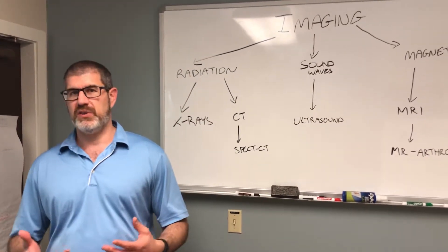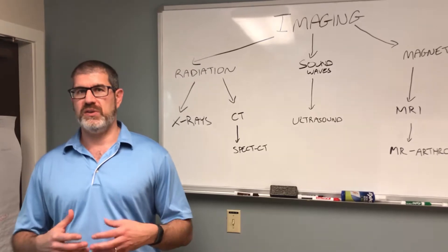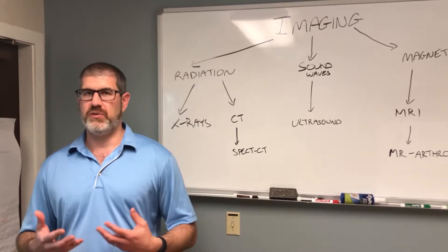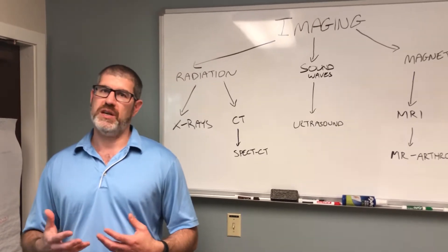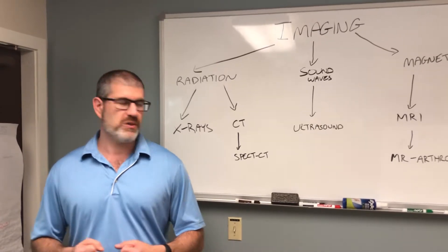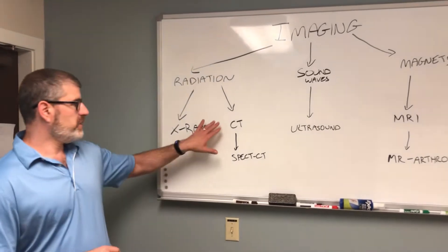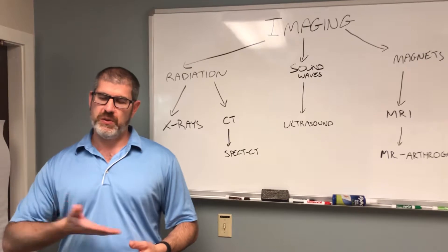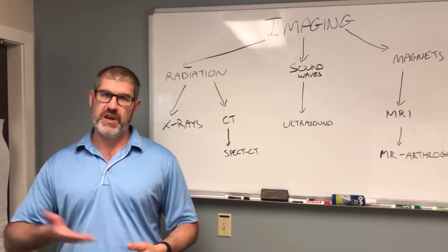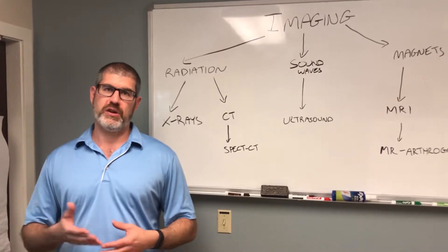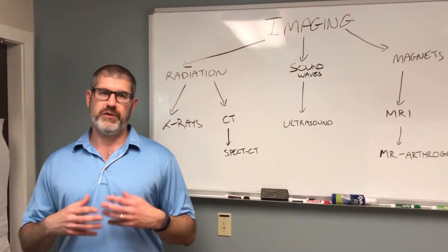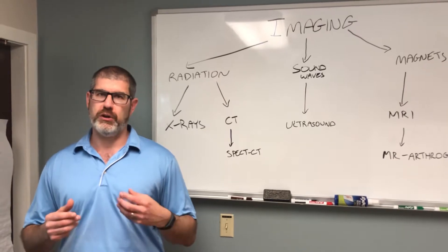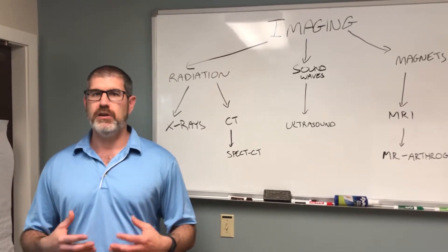The main limitation of x-rays is they basically see calcium and metal really well but have a hard time seeing other things, especially soft tissue injuries. A CT scan is another radiation-based image that takes a sequence of cuts and looks at cross-sectional anatomy. It's really the tool of choice when you want to look at bony anatomy in a lot of detail, though again it's not always the best choice for soft tissue.